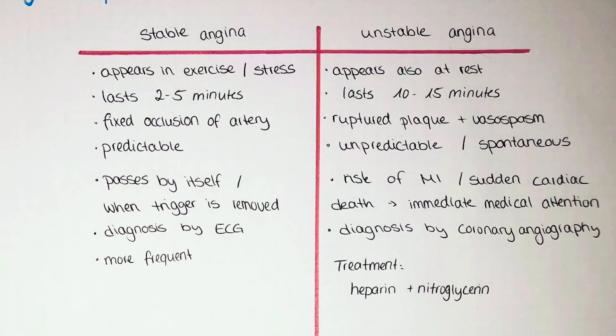I want to discuss the difference between stable and unstable angina, as this is often the subject of oral exams. Stable angina appears in exercise or stress — also emotional stress — when the heart is required to work harder and blood pressure increases. It usually has a sudden onset and lasts for two to five minutes. Stable angina is due to a fixed occlusion of the artery and will reoccur when the same workload is put upon the heart, making the anginal attack predictable both for the doctor and the patient.